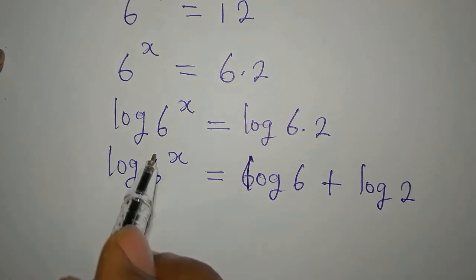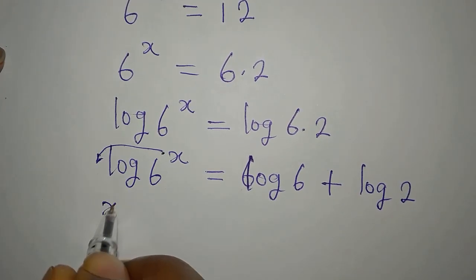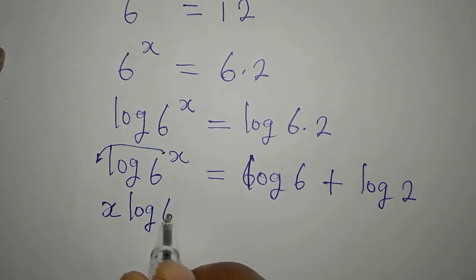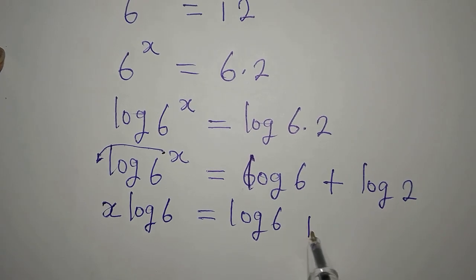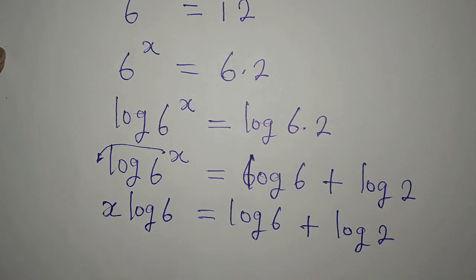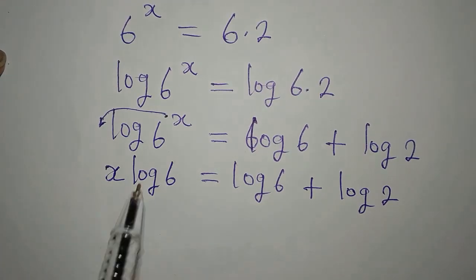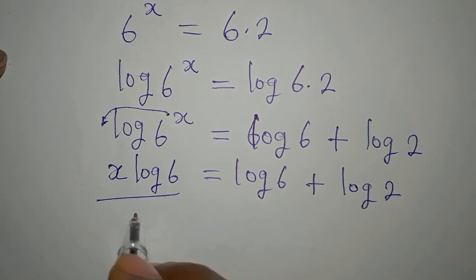The power here always goes behind, so we're going to have x multiplied by log 6 equals log 6 plus log 2.